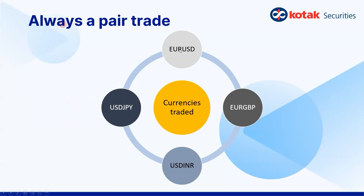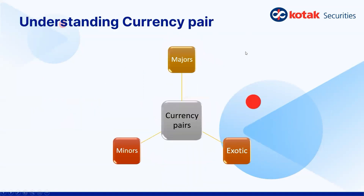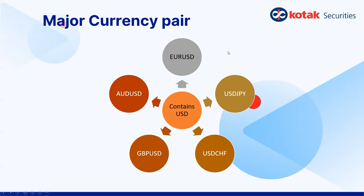Some common currency pairs are: Euro/USD (the euro and the US dollar), Euro/GBP (the euro and the pound), USD/INR (the dollar and the rupee), and USD/JPY (the dollar and the yen). Notice that three of these pairs have the dollar in them, while one — Euro/GBP — does not. When we talk about currency pairs, there are basically three main types: majors, minors, and exotics. Majors are currency pairs that have the US dollar in them, such as EUR/USD, USD/JPY, AUD/USD, GBP/USD, and USD/CHF.